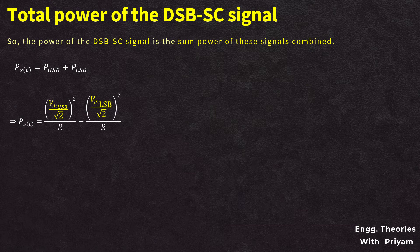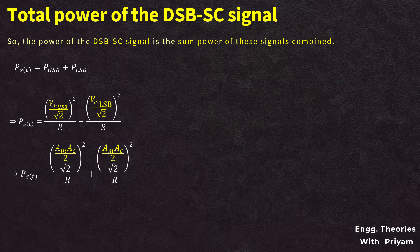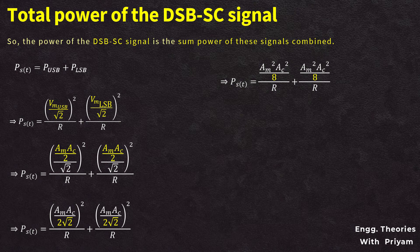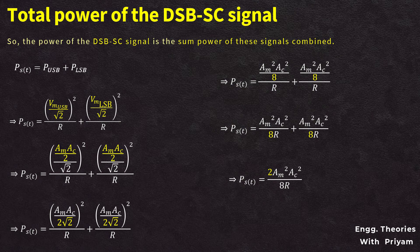The upper and lower sidebands each have amplitude AM·AC/2. Substituting into the power formula: PST = (AM·AC/2√2)²/R + (AM·AC/2√2)²/R = AM²·AC²/(8R) + AM²·AC²/(8R). Simplifying, the total power of the DSBSC modulated signal PST = AM²·AC²/(4R).